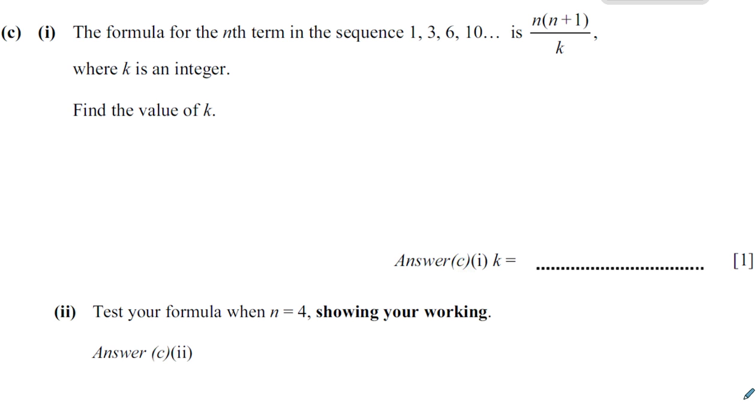The formula for the nth term in the sequence 1, 3, 6, 10 is n times n plus 1 over k, where k is an integer. Find the value of k.